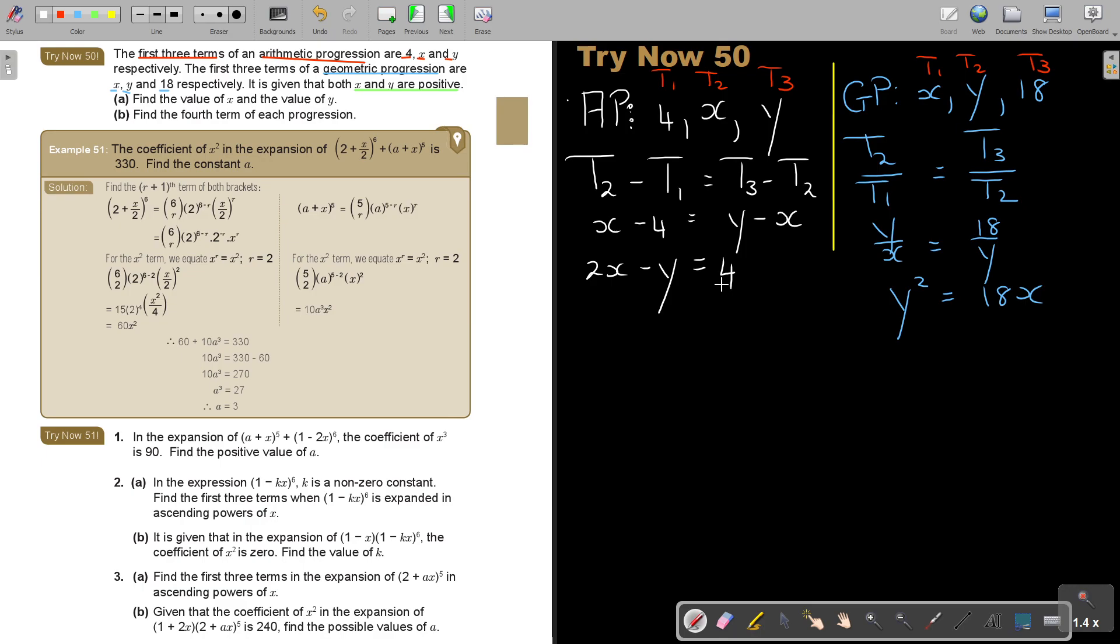Or if I want to make rather y the subject, because it's either x or y, I'm just going to redo it then, and rather say 2x minus 4 is equal to y. Because this is now equation 1, and this is equation 2.